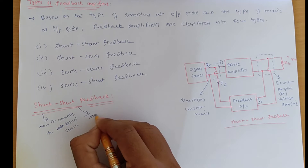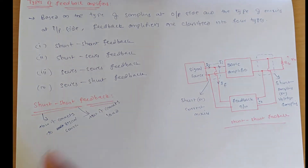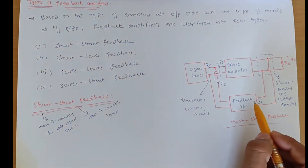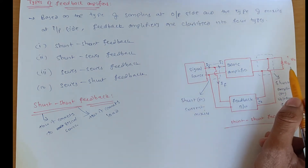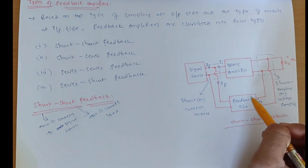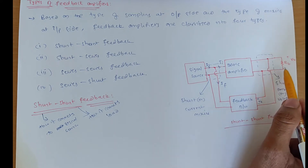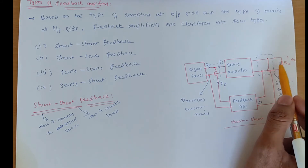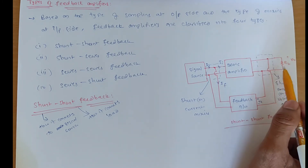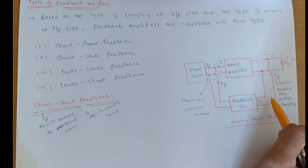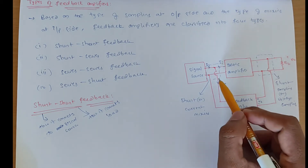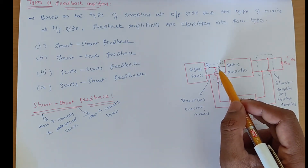When the feedback network is connected in shunt with the load resistor, we call this shunt sampling or voltage sampling. Here we are taking the output across the load resistor — we are connecting it in parallel. Whatever voltage appears across the load resistor is connected to the feedback network input. The output of this feedback network is then connected to the signal source in the shunt manner.